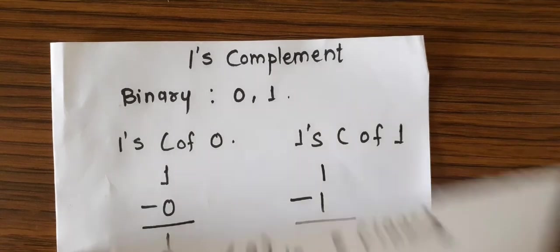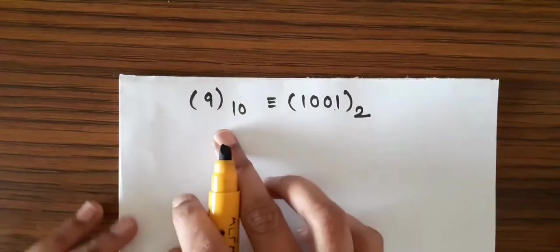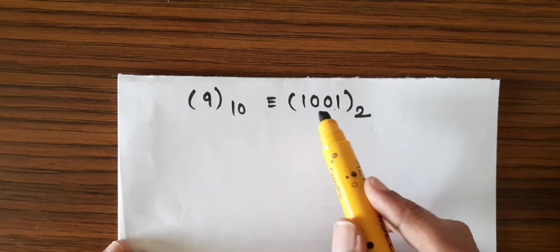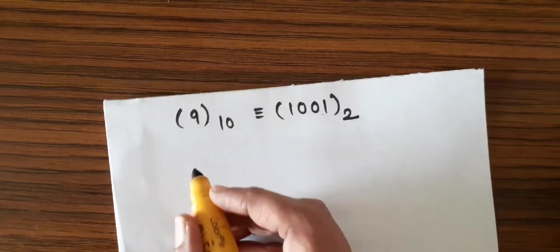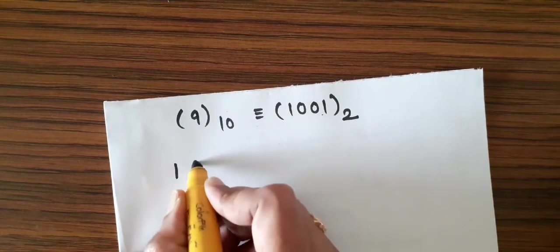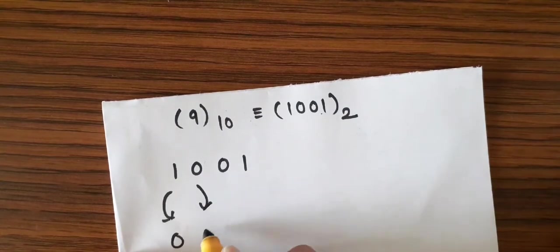We will see this with another example. Let's say we are given 9 in decimal, whose binary equivalent is 1001. Since this is 4 bits long, we can have its 1's complement just by inverting the bits: 1 to 0 and 0 to 1.